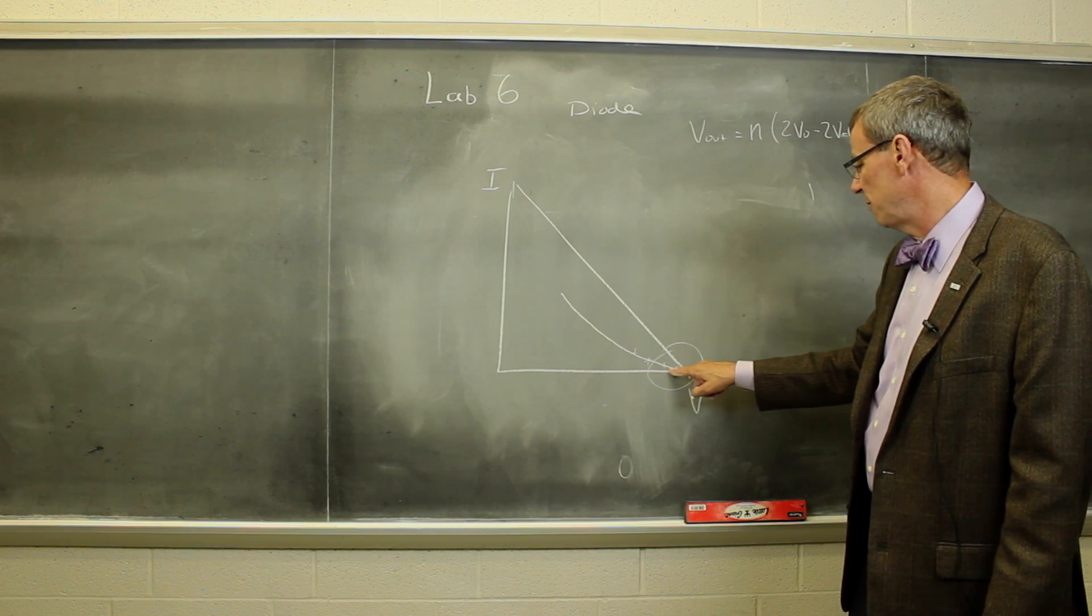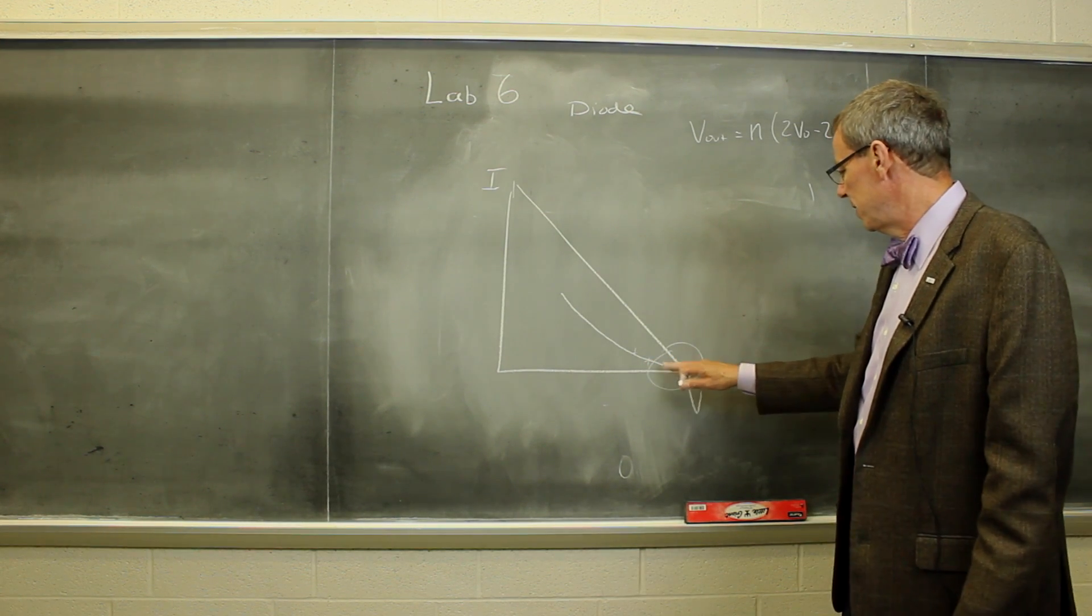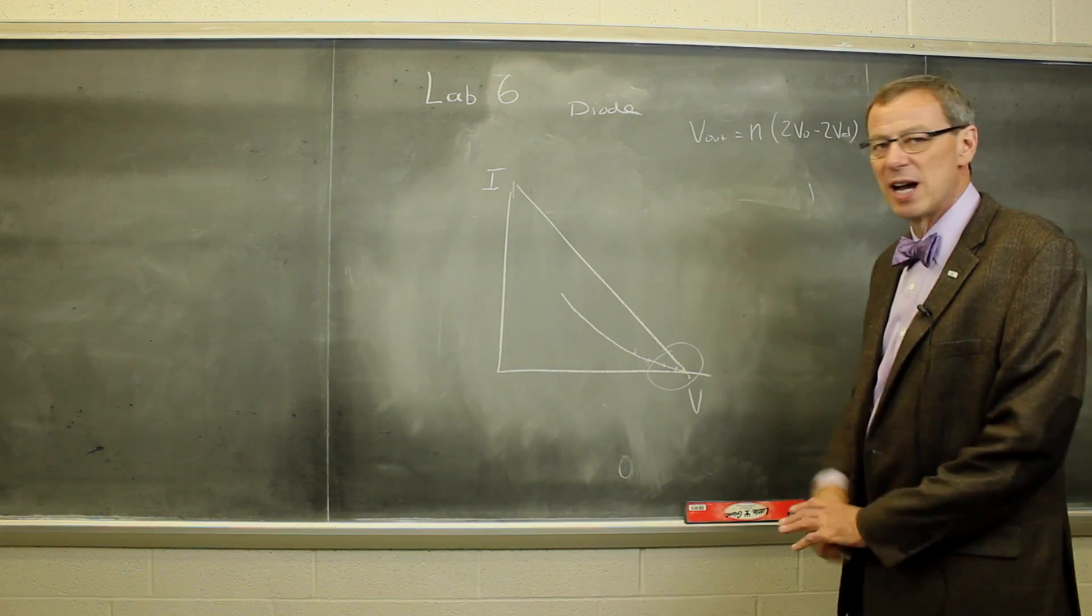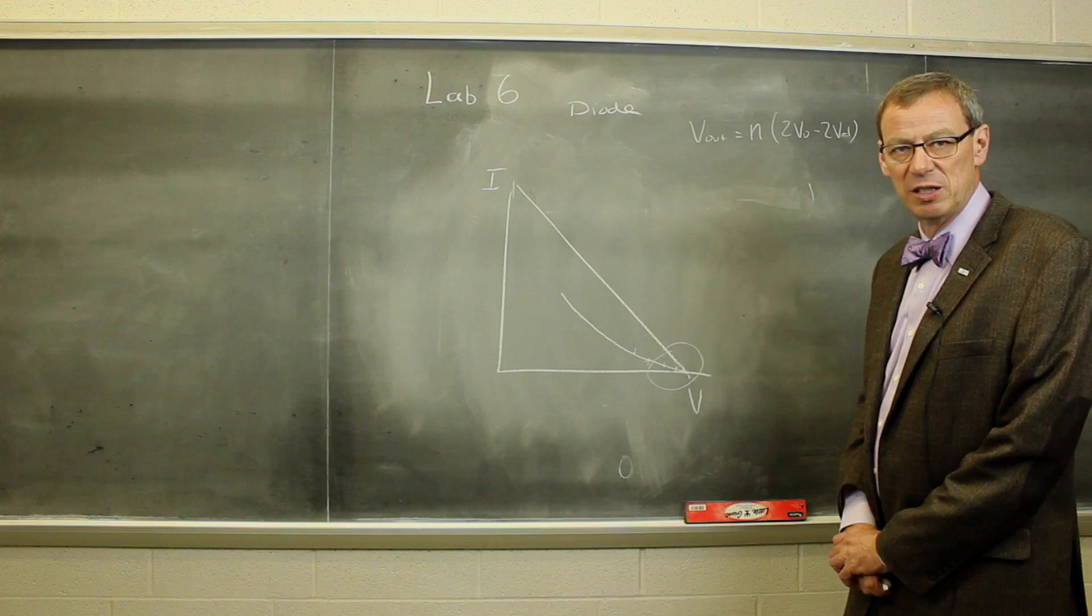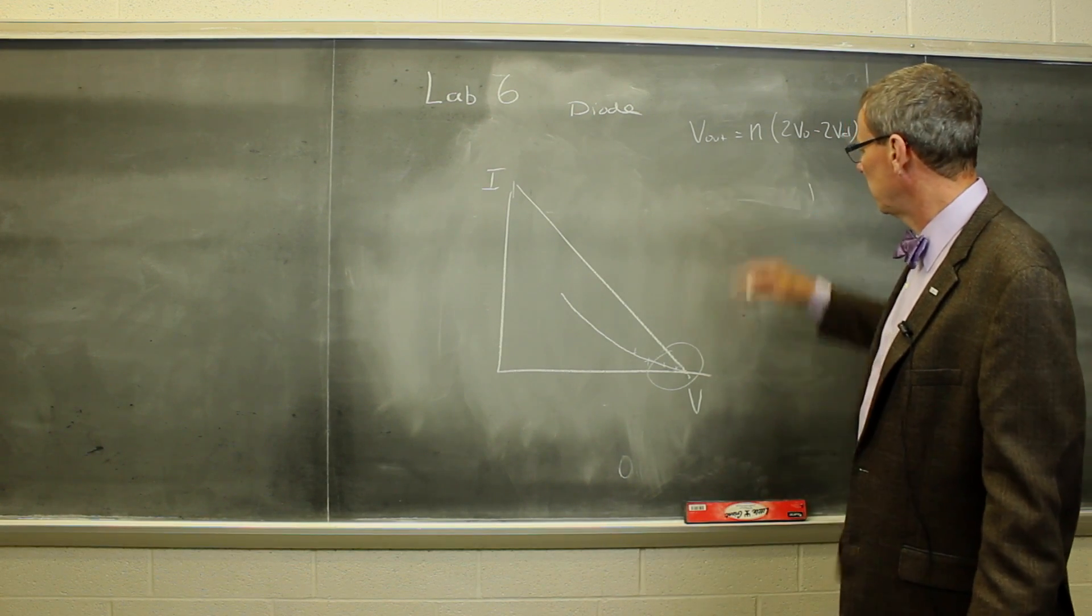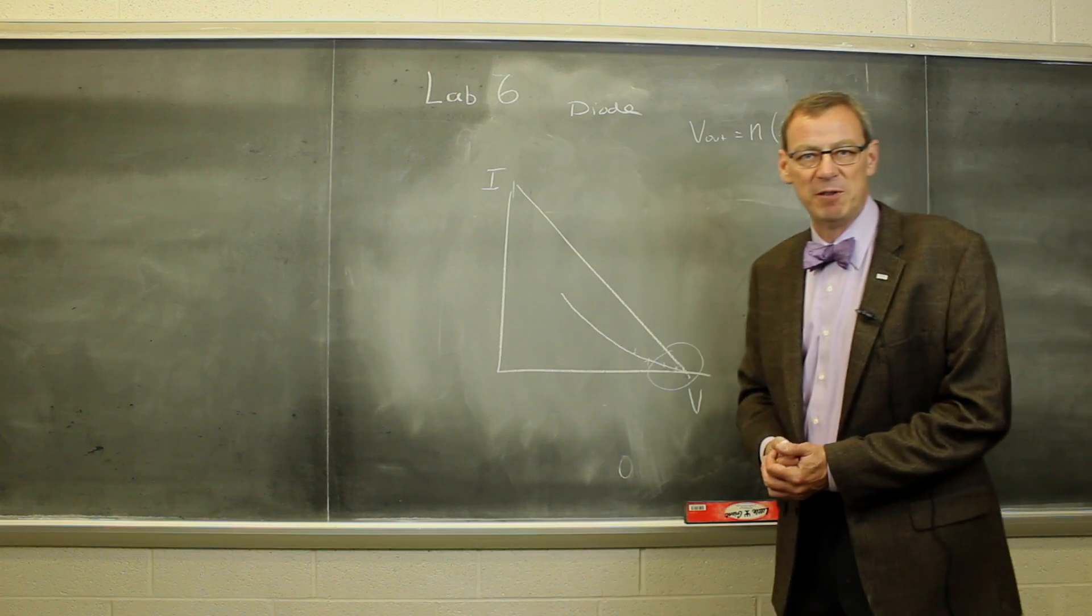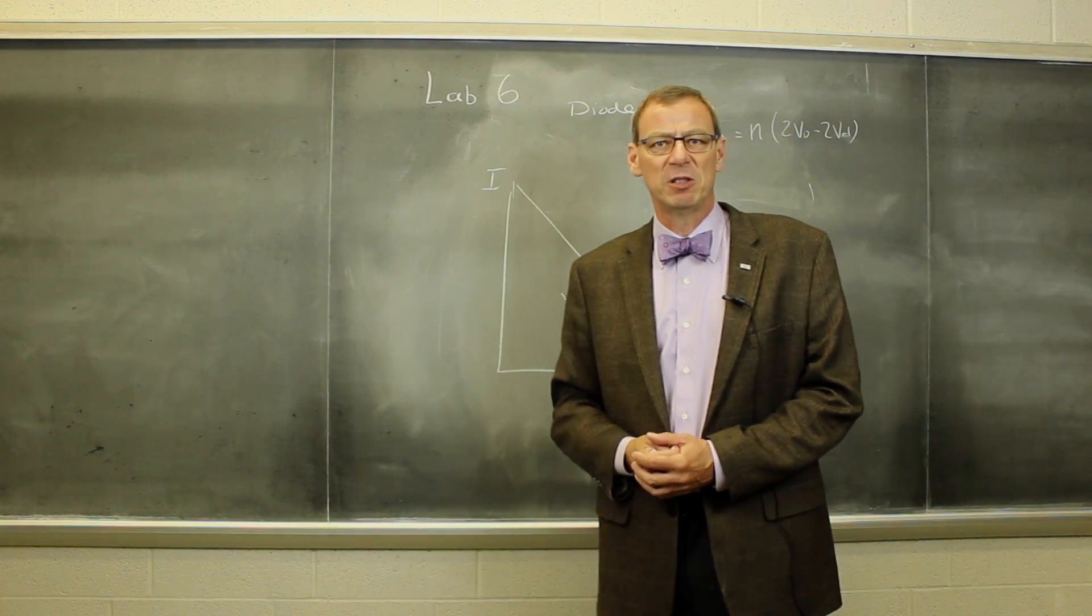And the negative one over that slope is going to be the output impedance of this multiplier near where we actually want to operate. So that's what we're going to do with this. So we're going to build this multiplier circuit, and then try to map out this output impedance and see the behavior of that. So now let's go down to the lab and have a look at this.